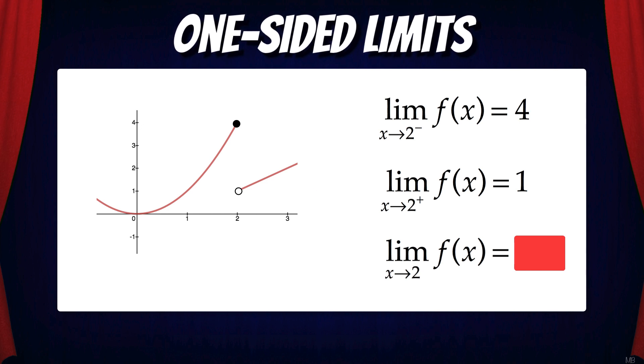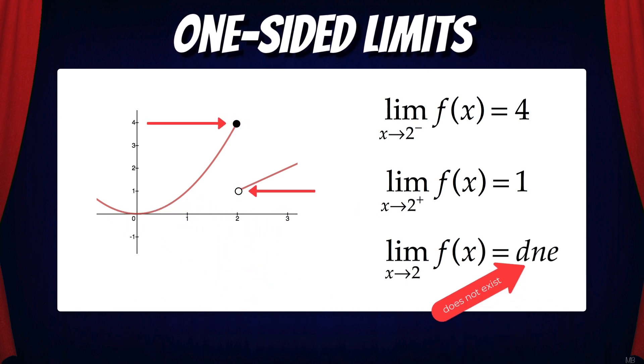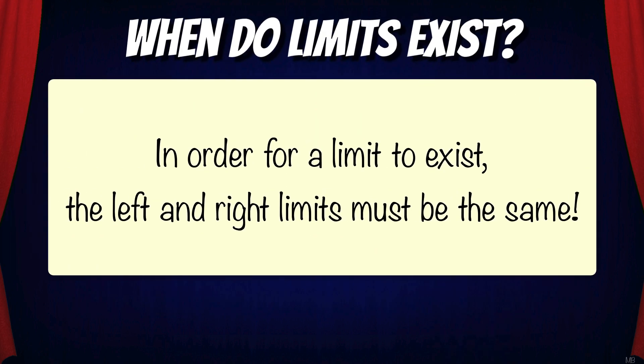But what's the limit of f of x as x approaches 2? Since the left and right-hand limits don't match, that means the limit does not exist. And this brings up a very important point in regards to limits. In order for a limit to exist, the left and right limits must be the same.